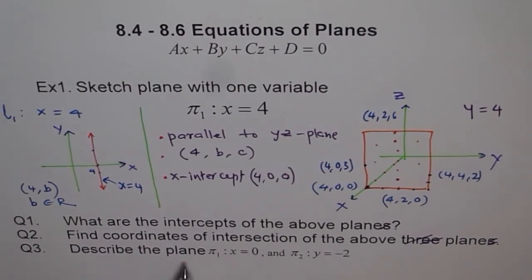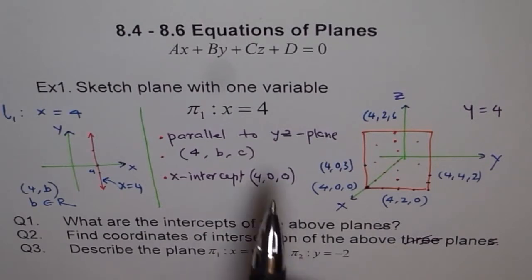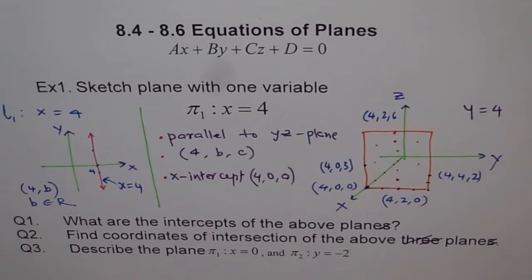Describe the plane pi one x equals zero. So I changed this question. Instead of x equals four, if I write x equals zero, you need to describe that plane. Another plane will be y equals minus two. So try to sketch these planes, write their properties and characteristics. Even if you give these three kind of characteristics, it's good, more than enough. It's good enough. So do that. I hope you understand about equation of planes now.